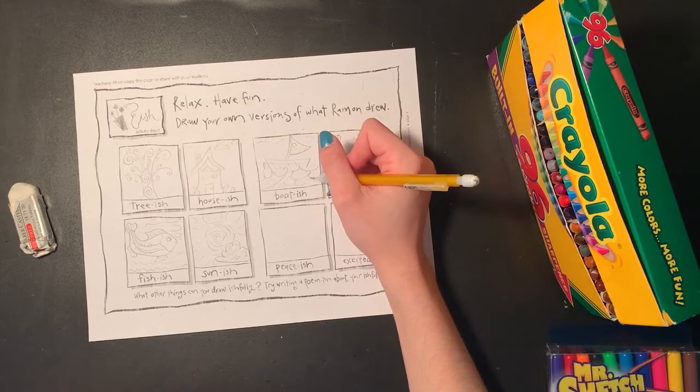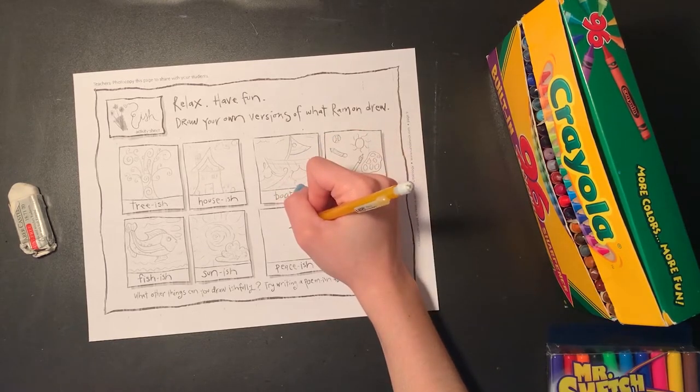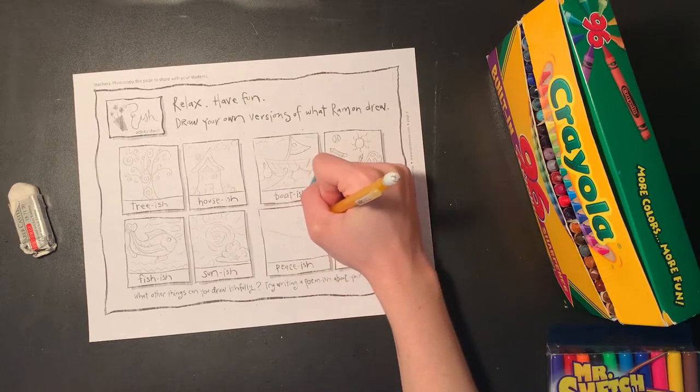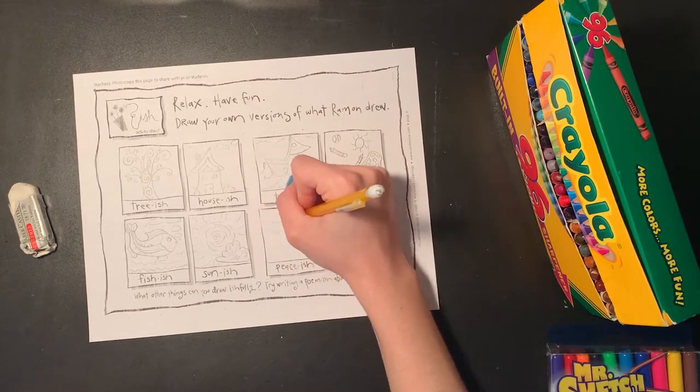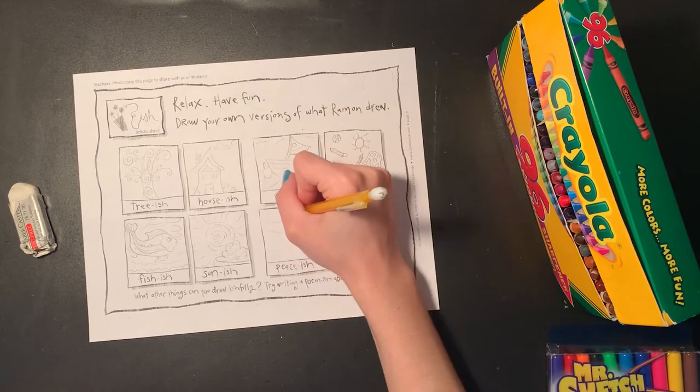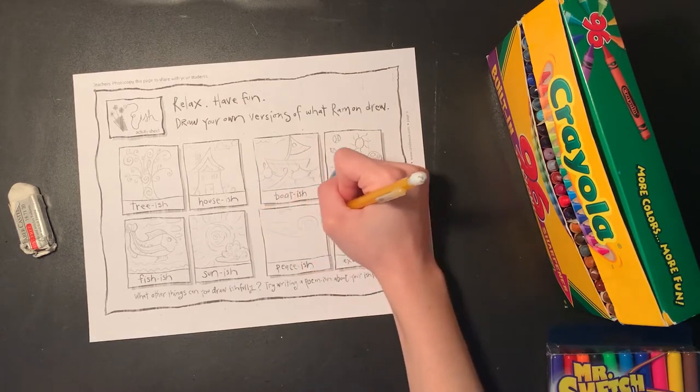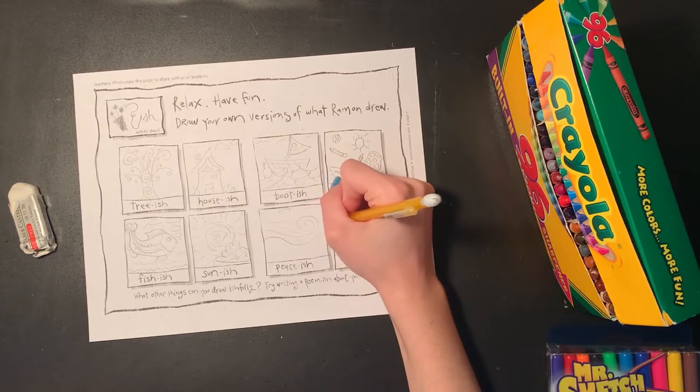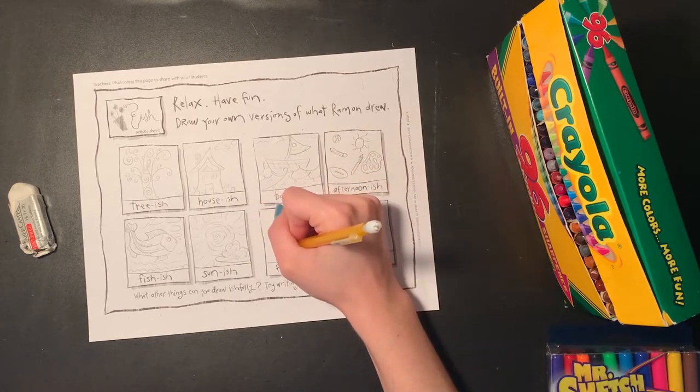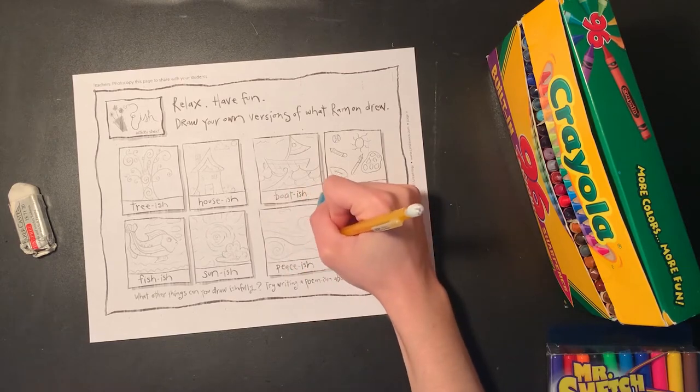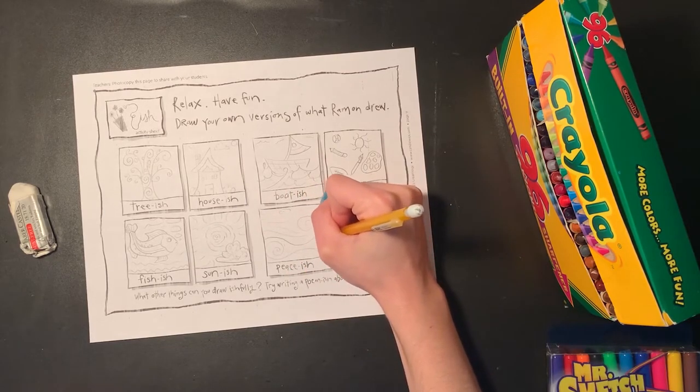The next one we have is peace-ish. What do you think peace looks like? I'm going to draw some big swirling lines. Because when I think of peace, I think of calm colors. And I think of big swirls that are moving and working together. So maybe some of your pictures aren't even drawings of real things. Maybe they are just lines and shapes coming together to create something new.